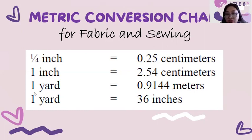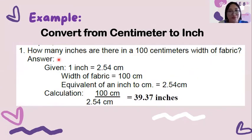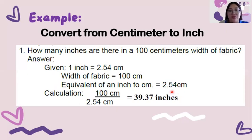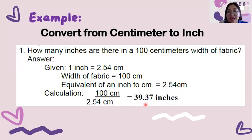This conversion will be used to calculate the width of the fabric. How many inches are there in 100 cm width of fabric? Our given is 1 inch is equal to 2.54 cm, and the width of the fabric is 100 cm. To calculate 100 cm to inches, we must divide it by 2.54 cm, and the answer is 39.37 inches. That is the conversion from cm to inch.